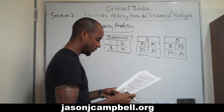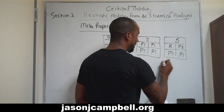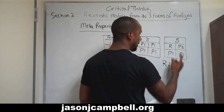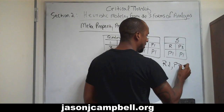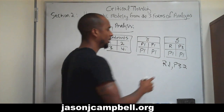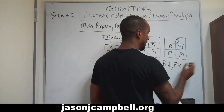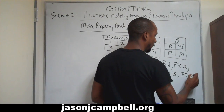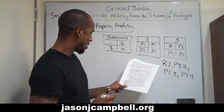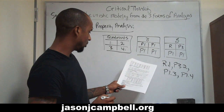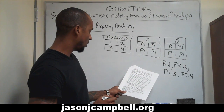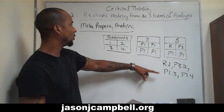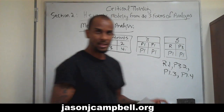If we look at delta now, how are we going to identify this? We would say this is R1 — property R in quadrant 1. This is P3.2. This is P1.3. And this is P1.4. So: R.1, P3.2, P1.3, P1.4. If you understand that, you can see this is far more technical than the last analysis.